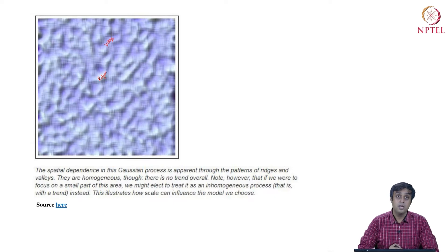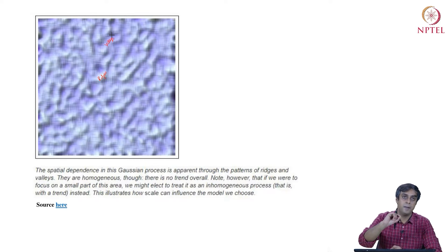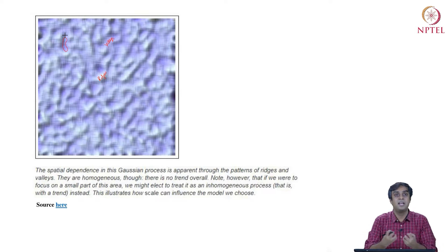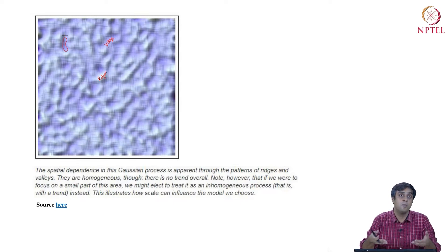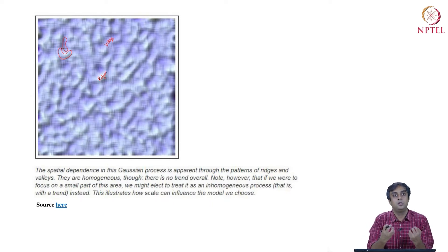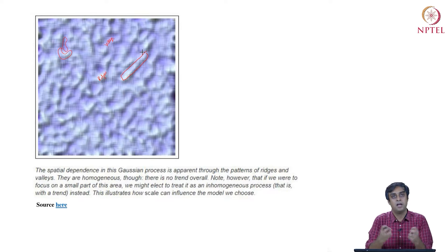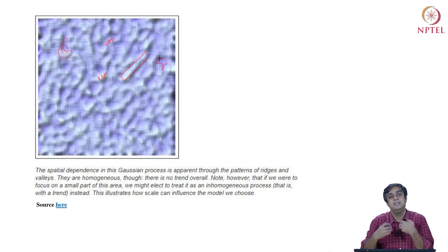Ridges and valleys are distributed randomly across space — there is no pattern of ridges clustering in one corner or valleys clustering in another. So there is no spatial heterogeneity in how ridges and valleys occur; they are equally distributed across space with no specific trend. However, height values are clustered: lower height levels occur together forming a valley, and higher height levels occur together in a spatially dependent manner to form a ridge.